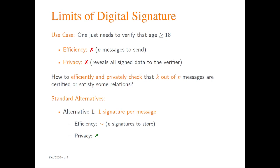Actually, there are many other alternatives that we could use. For example, we could simply issue one signature per message. This way, when we want to check one specific message, we simply ask to send one message, which is better regarding privacy. But the problem is that now, instead of one signature, we have to store n signatures, which is a problem regarding efficiency.